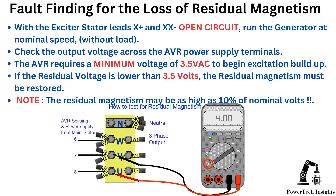With the exciter stator leads X-plus and XX-negative open circuit, run the generator at nominal speed without load. Check the output voltage across the AVR power supply terminals. The AVR requires a minimum voltage of 3.5 VAC to begin excitation buildup. If the residual voltage is lower than 3.5 volts, the residual magnetism must be restored.